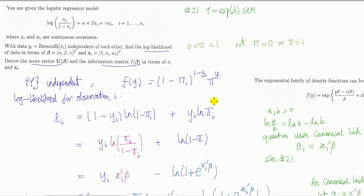Today's question is on the logistic regression model. We're asked to find the log likelihood, the score vector, and the information matrix. I've already solved one of these regression problems in problem 21 for a different distribution, and I did it in more detail there. This is going to go a bit quicker.